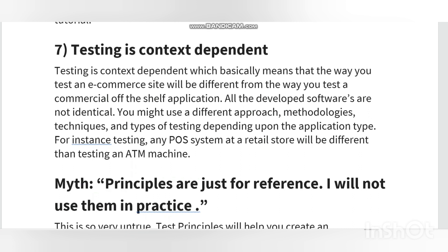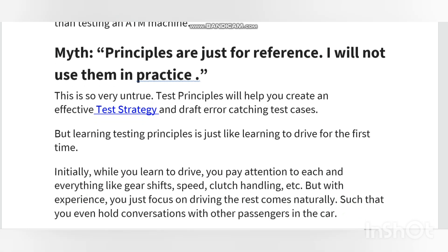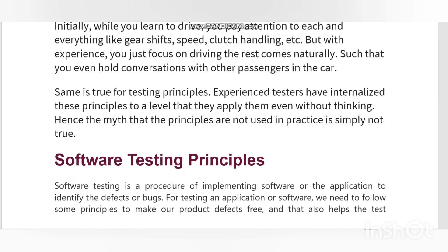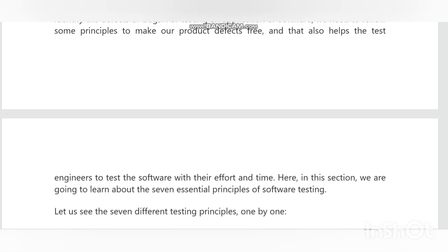Now I am discussing in detail the seven principles. Exhaustive testing is not possible; instead, we need the optimal amount of testing based on the risk. So if we were testing an operating system, you realize the defects are likely to be found in multitasking activity and need to be tested thoroughly, which brings us to our next principle — defect clustering.